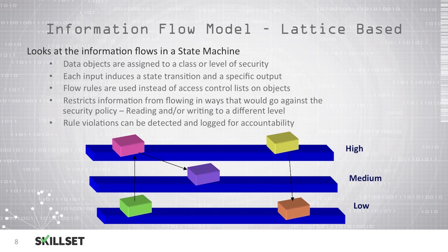And here, we don't use access control lists for objects. We use flow rules, and we try to restrict information from flowing in ways that would violate our security policy. For example, if a user takes a piece of top secret data and saves it into an unclassified area, then unauthorized individuals would be able to access it. So we want to prevent this type of behavior, and this model also allows for the detection and logging of any rule violations to ensure some accountability in case these types of activities are occurring.